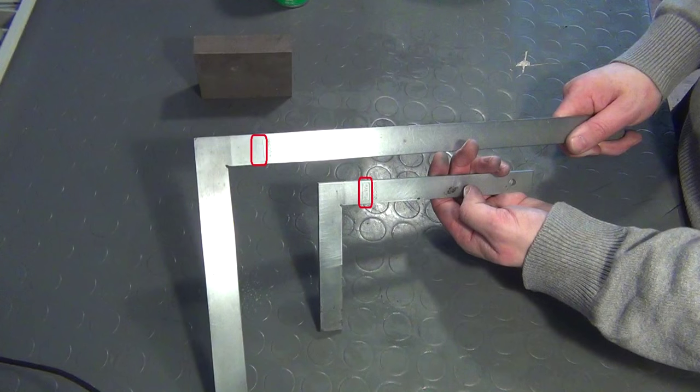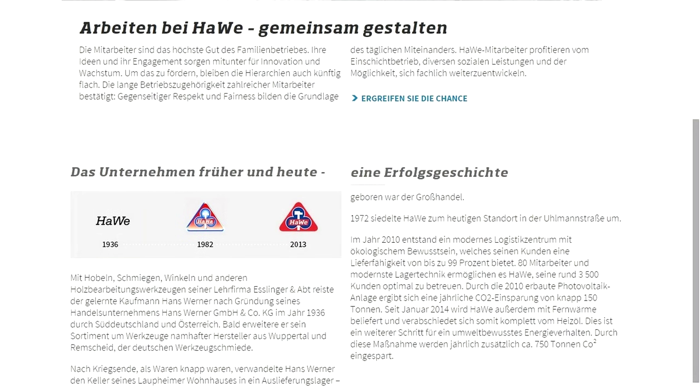Here we can see the HW logo. It is short for Hans Werner, which is the name of a traditional German tool retailer. Judging by the looks of the logo, I would say that these squares were made before 1982, since the HW website shows that the old logo has been exchanged against a newly designed one in that year.